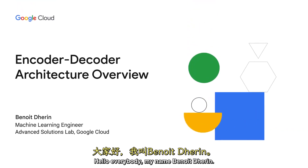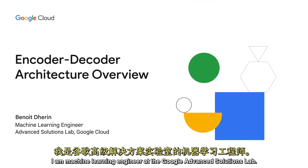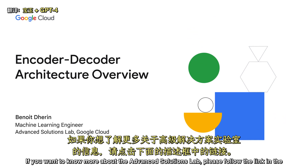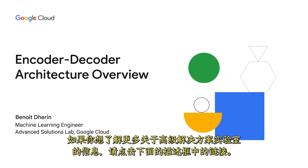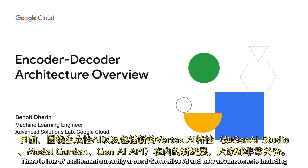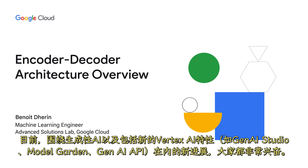Hello everybody, my name is Benoit Derain. I'm a machine learning engineer at Google's Advanced Solutions Lab. If you want to know more about Advanced Solutions Lab, please follow the link in the description box below. There is a lot of excitement currently around Generative AI and new advancements including new Vertex AI features such as Gen AI Studio, Model Garden, and Gen AI API.